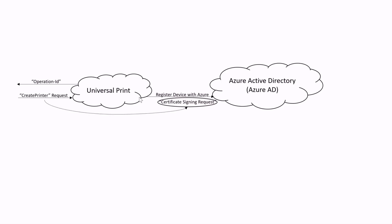This CSR should be part of the Create Printer Request message. Once the registration is successful, Azure AD returns a Device Certificate. You can use the operation ID to get the status of the registration. If the registration is successful, Universal Print returns the Printer Certificate and Printer Object.